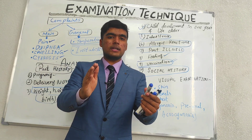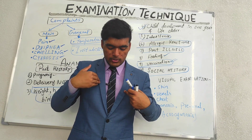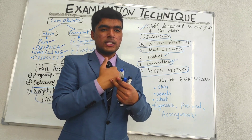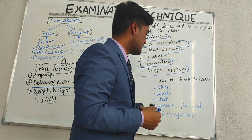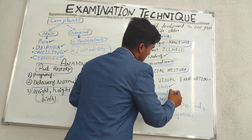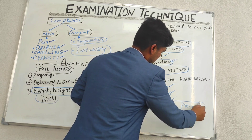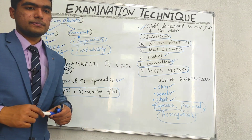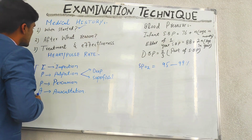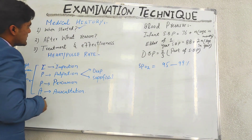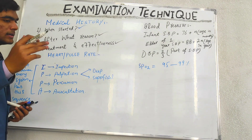Whenever a patient approaches us and is sitting in front of us, we will definitely do a visual examination. We will see and identify from skin color, eye color, and hair color the complaints that the patient has. This is basically the visual examination — skin, vessels, chest, and sinuses, preload and acrosinuses will be identified by these findings. In case of medical history, we ask the patient when the disease or symptoms started, after what reason this started, and what treatment and effectiveness the patient feels.